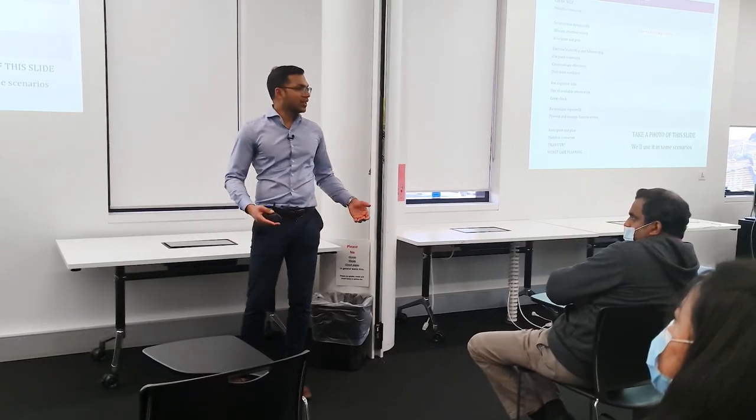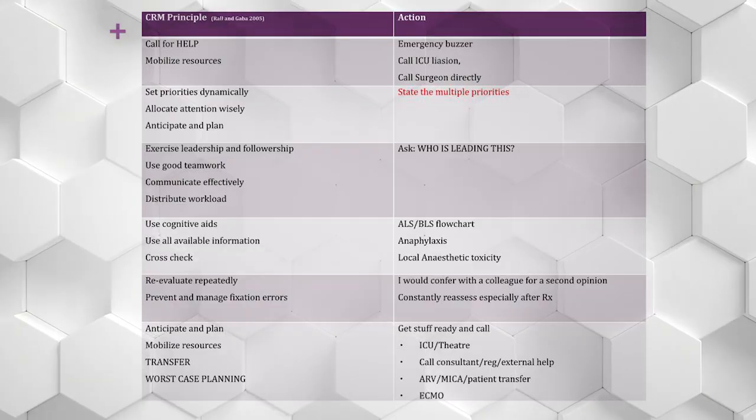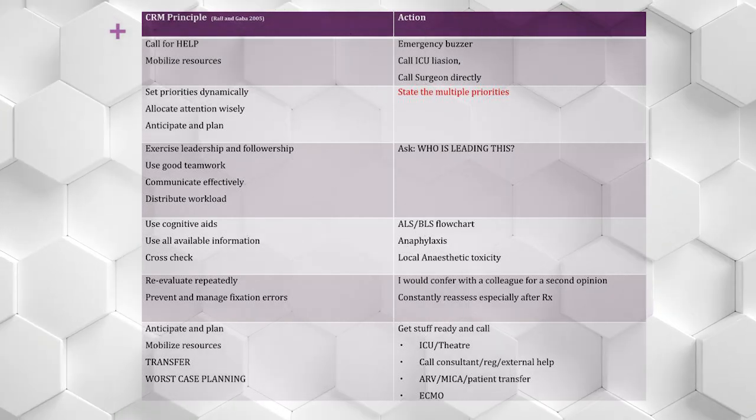Re-evaluate repeatedly — constantly reassess the patient, take blood pressures, watch the sats probe and numbers. Anticipate, plan, and mobilize resources: press the emergency buzzer, call the ICU liaison, call the surgeon directly, triple four, ask who is leading, and have someone senior who knows their staff allocate these critical tasks. Use intranet resources, crash cards, Google, ALS and BLS flowcharts, anaphylaxis guides, and local anaesthetic toxicity guides. Confer with colleagues — I want to know I'm not missing something. Get stuff ready and call ICU, theatre, the consultant, the registrar, or consider transfer and even ECMO if needed.